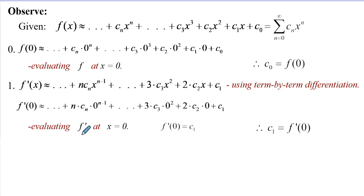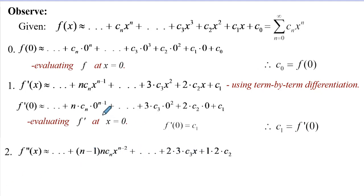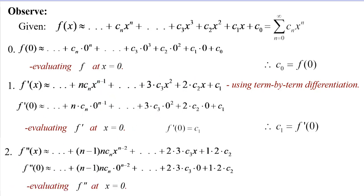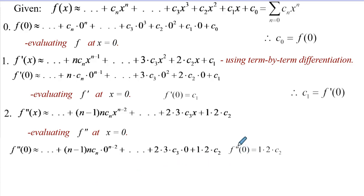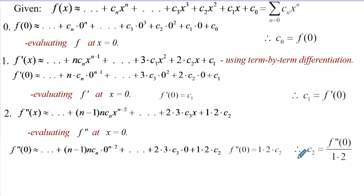Continuing this process, we take the second derivative of the function, applying the power rule. Evaluating that at x = 0, we are left with f''(0) = 1 × 2 × c_2. Since 1 × 2 is actually 2 factorial, we can conclude that c_2 equals the second differential coefficient evaluated at 0, divided by 2 factorial.